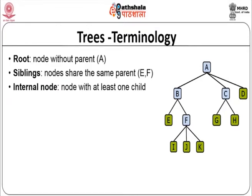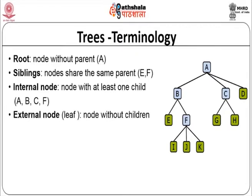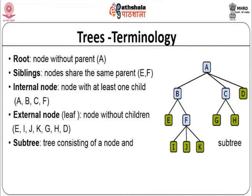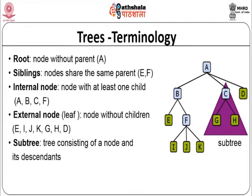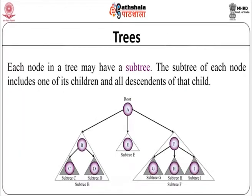An internal node is a node which has at least one child. What are the internal nodes in this particular example? A is an internal node, B is an internal node, C is an internal node, and F is an internal node - all the ones colored blue are internal nodes. External nodes are leaves without any children. All the green nodes here are leaves - for example, E, I, J, K, G, H, and D are all leaves or external nodes. A sub-tree is a tree consisting of a node and all its descendants. For example, C, G, and H form a sub-tree.